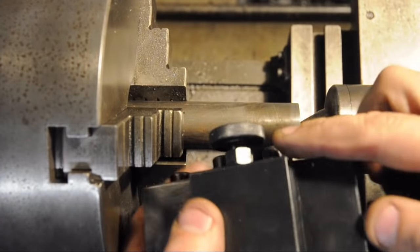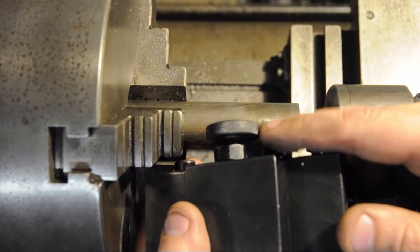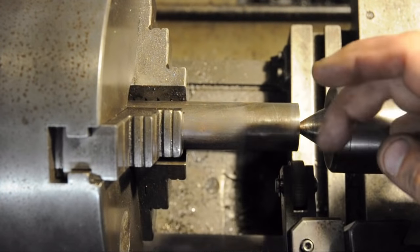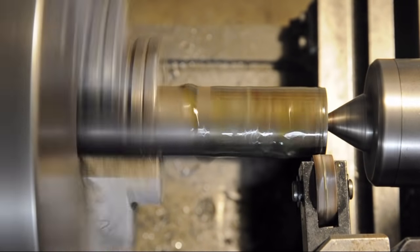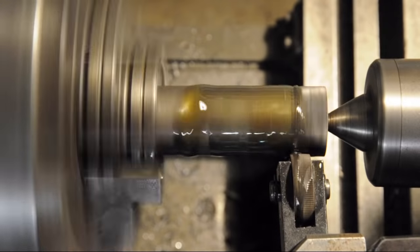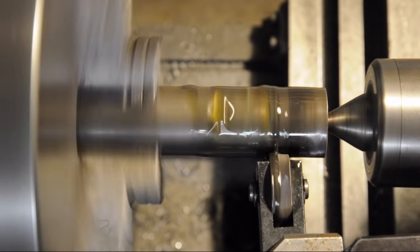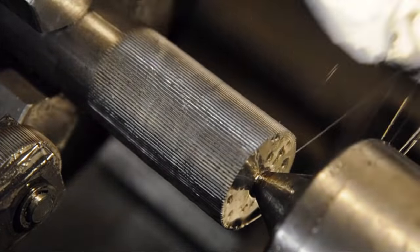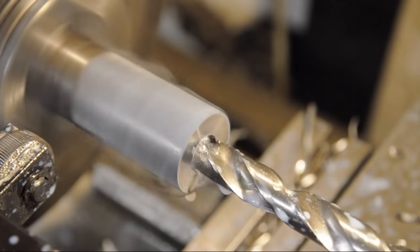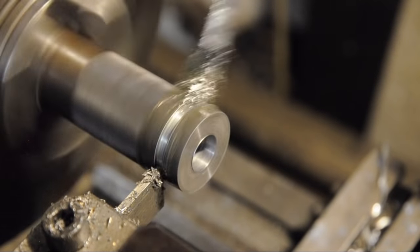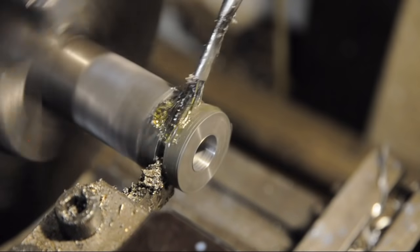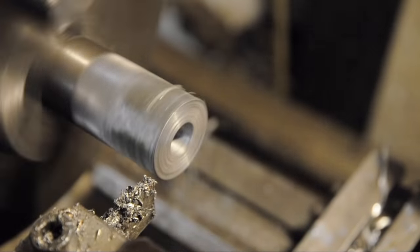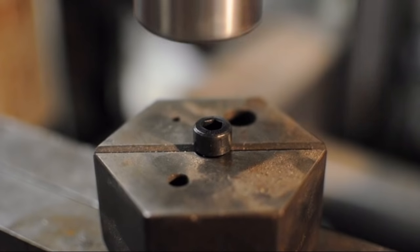The last part I need to make is this little knurled thumb screw for the height adjust. I'm going to need five of them. I'm just going to do a straight knurl across, drill it through, part them off, and I'll press them onto the screws.